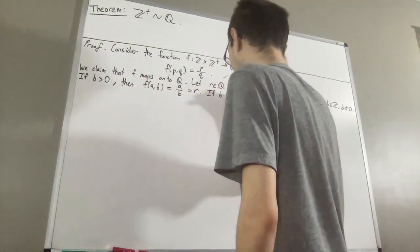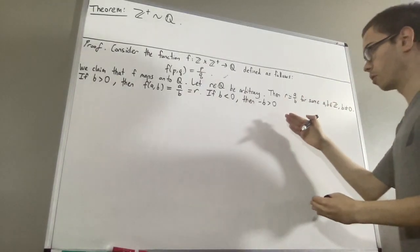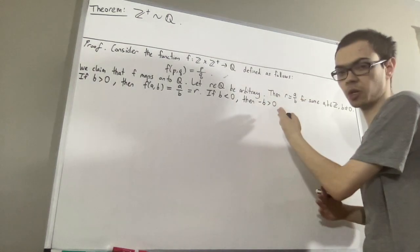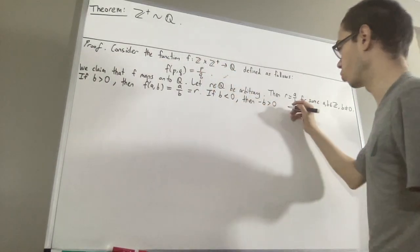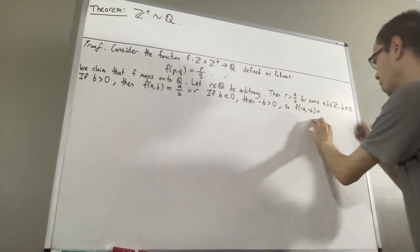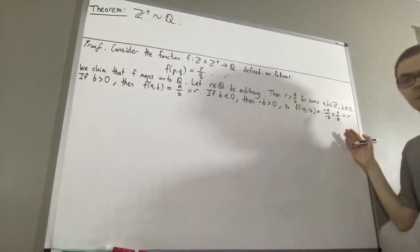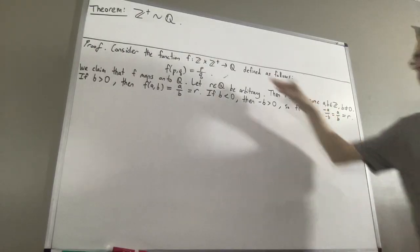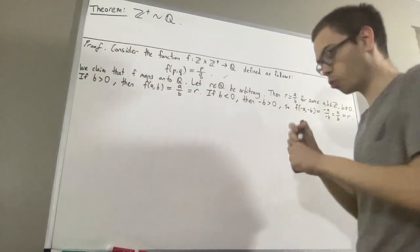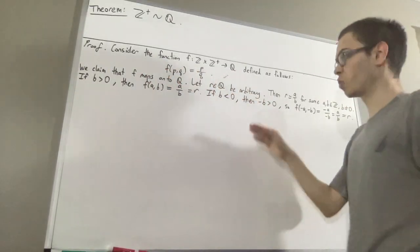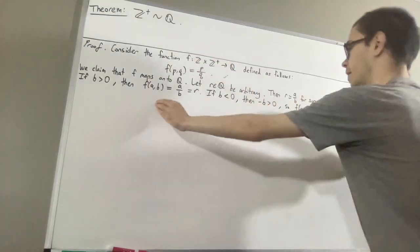Now consider the case b less than zero. If b is less than zero, then negative b is greater than zero. So negative a is an integer and negative b is a positive integer, and we can send the ordered pair (-a, -b) into f. By definition of f, this equals -a over -b, which equals a over b, and a over b equals r. We have again shown there exists an ordered pair mapping to r, proving that f maps onto the set of rational numbers.